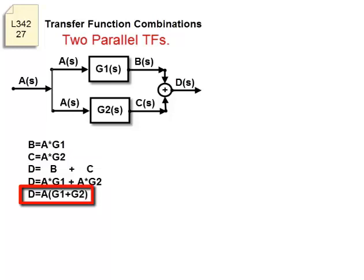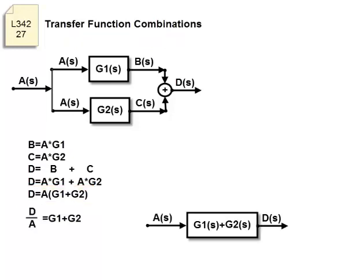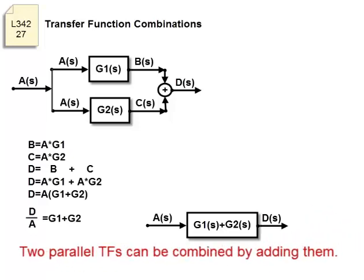Factor out the A. D divided by A is G1 plus G2. Therefore, two parallel transfer functions can be combined by adding them.